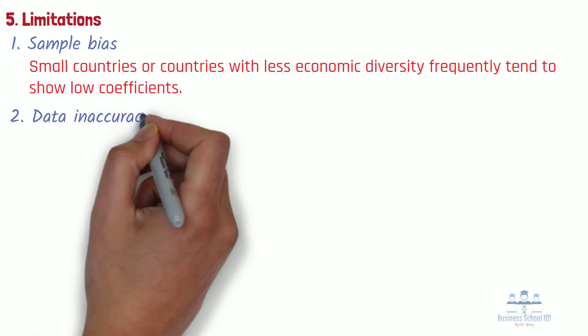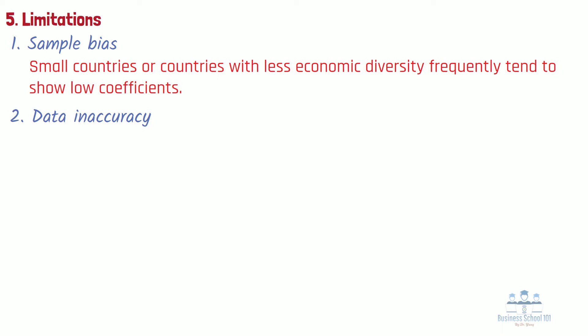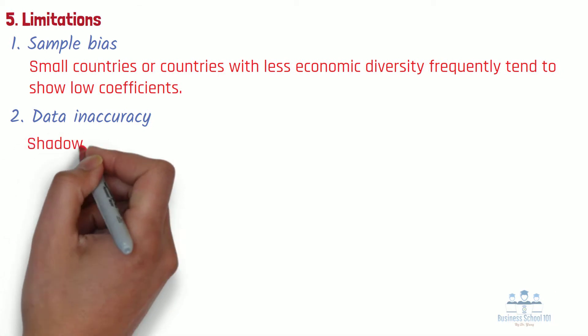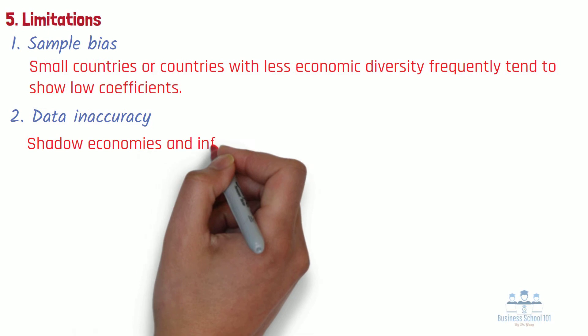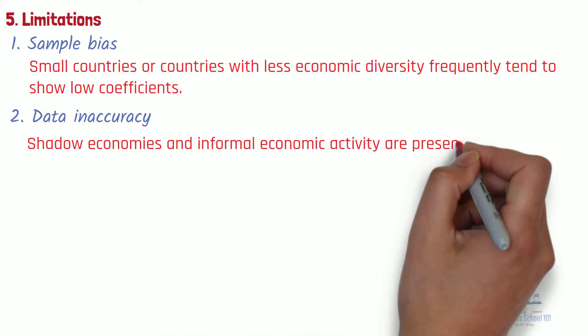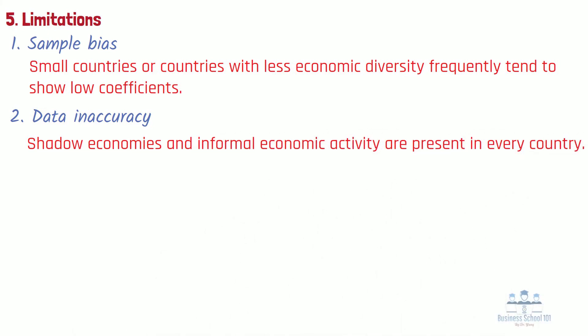Second, data inaccuracy: inaccurate data can distort the validity of the coefficient. For example, shadow economies and informal economic activity are present in every country and could represent a larger portion of true economic production in developing countries and at the lower end of the income distribution. In both cases, the Gini index of measured incomes will overstate true income inequality.